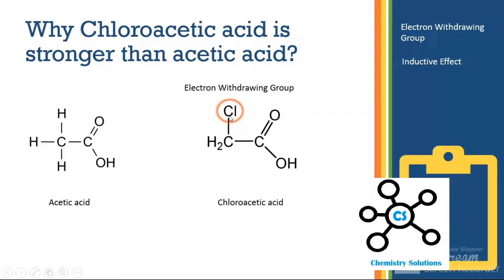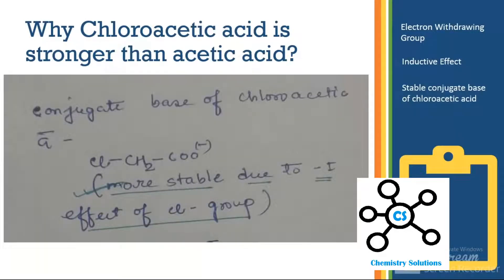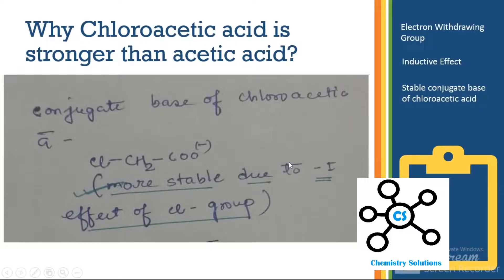The electron withdrawing group also causes an inductive effect within the molecule. The goal of each reaction is to achieve stability. When chloroacetic acid releases the proton, it converts into its conjugate base, and the conjugate base of chloroacetic acid is relatively more stable compared to chloroacetic acid itself — due to the inductive effect of the chloro group. So it prefers to donate the proton to gain stability.